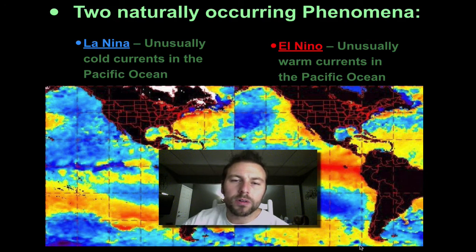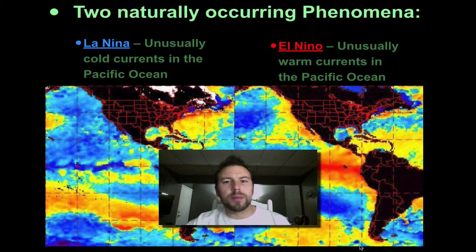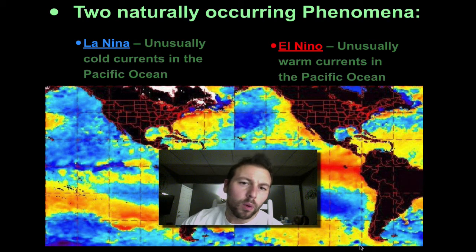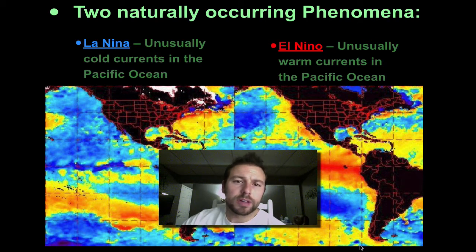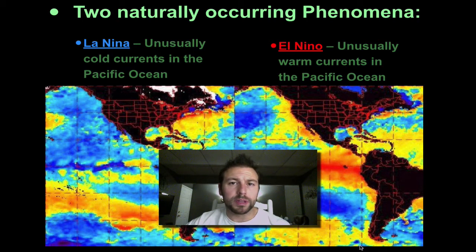Hello ladies and gentlemen and welcome back to another screencast by your earth science teacher Mr. Stano. Last time we were talking about climatic factors that affect our climate. In this screencast we're going to look at El Niño and La Niña as two phenomena that affect the Pacific Ocean and ultimately affect global oceanic and wind patterns.